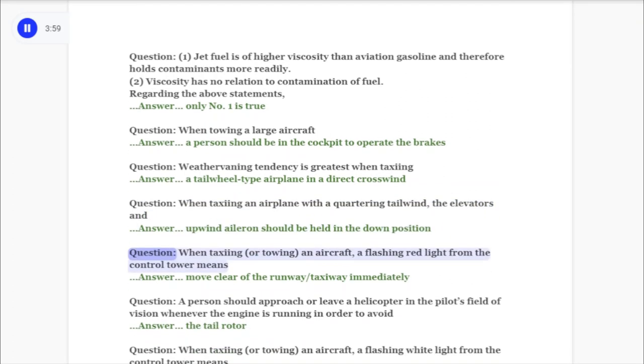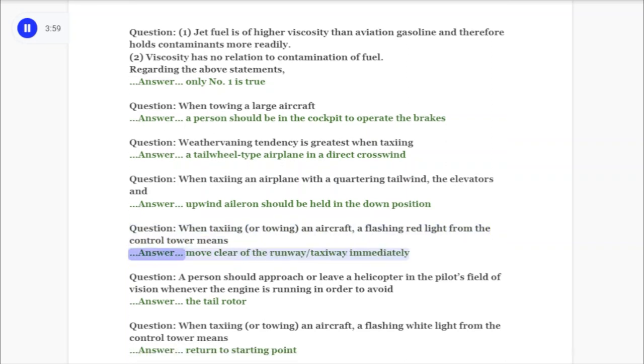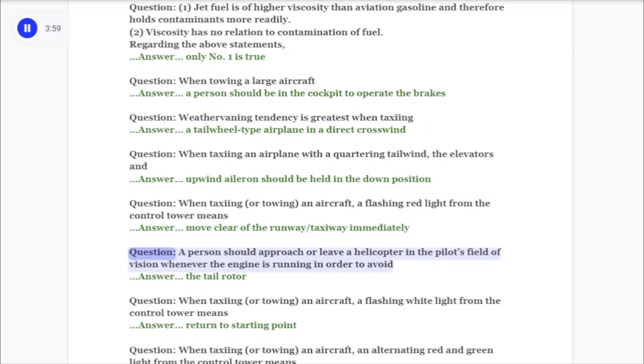Question: When taxiing or towing an aircraft, a flashing red light from the control tower means? Answer: Move clear of the runway/taxiway immediately. Question: A person should approach or leave a helicopter in the pilot's field of vision whenever the engine is running in order to avoid? Answer: The tail rotor.